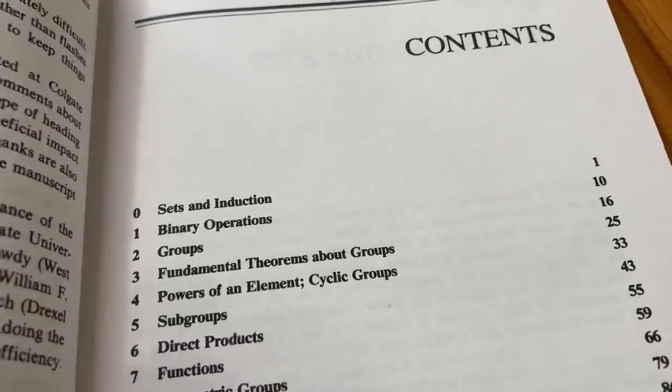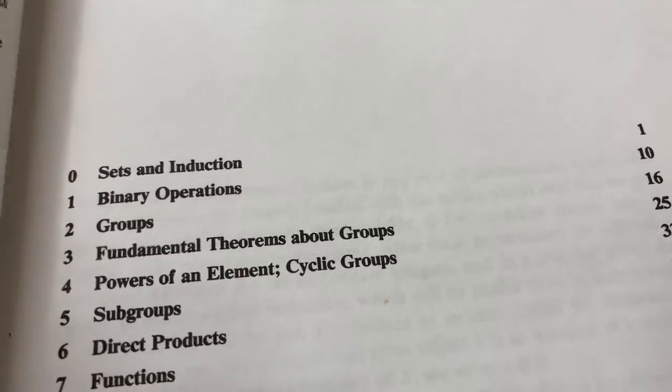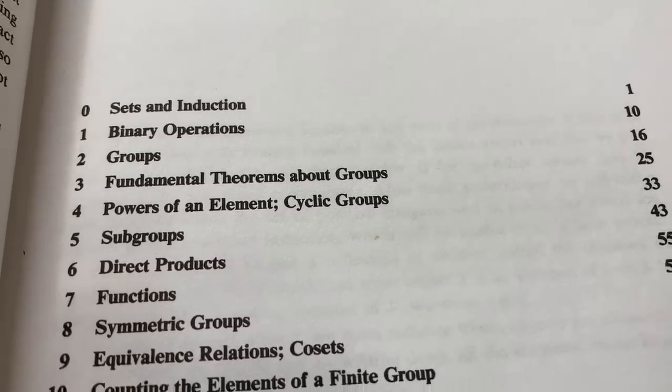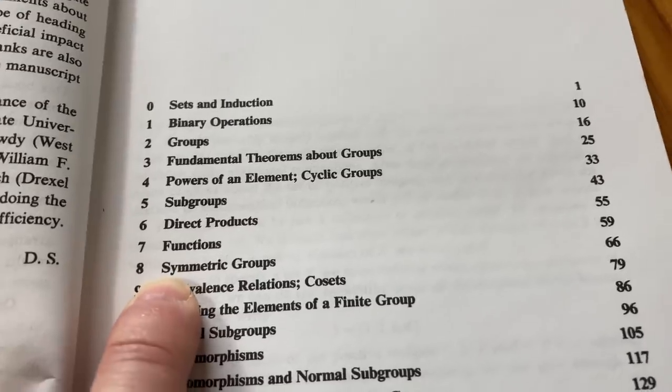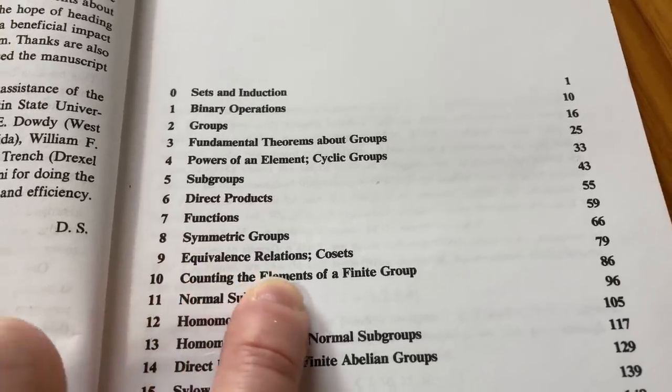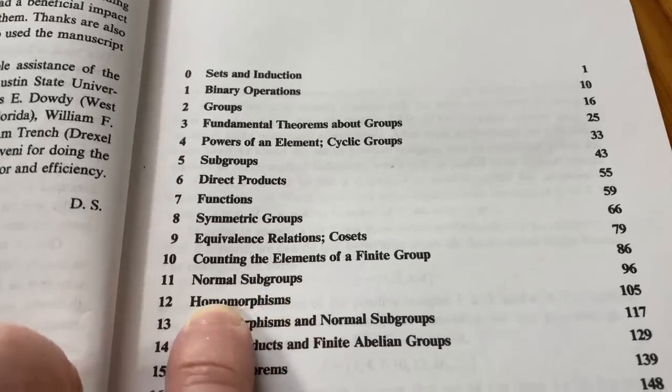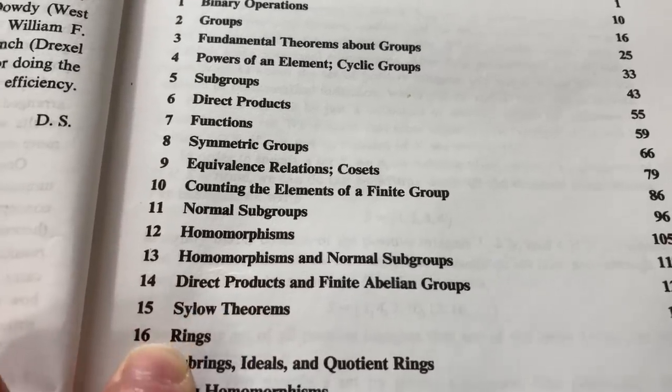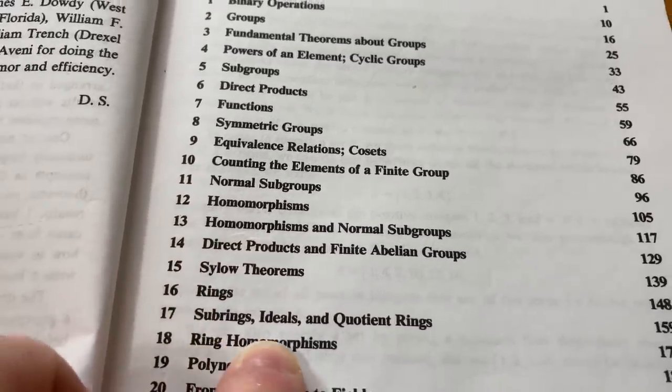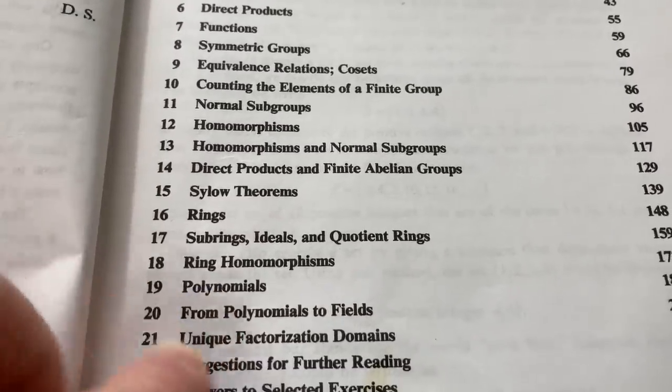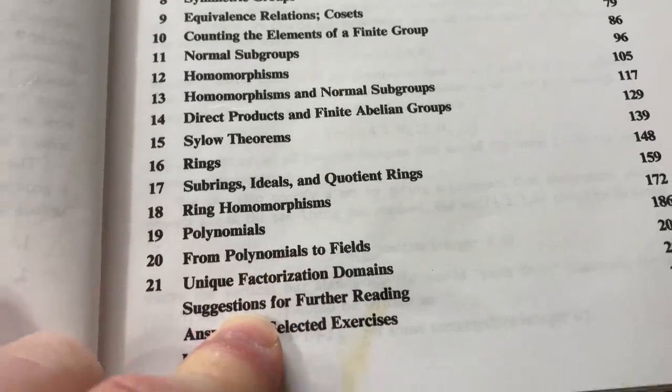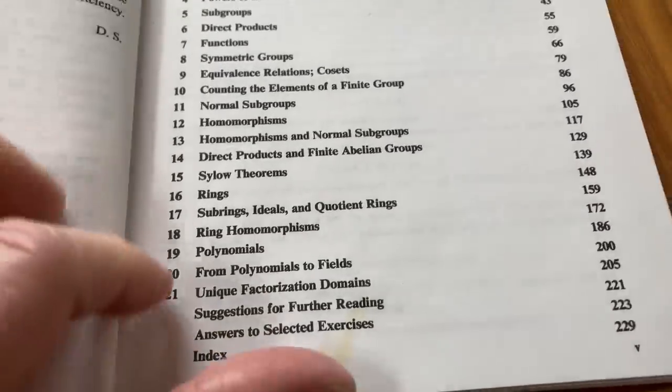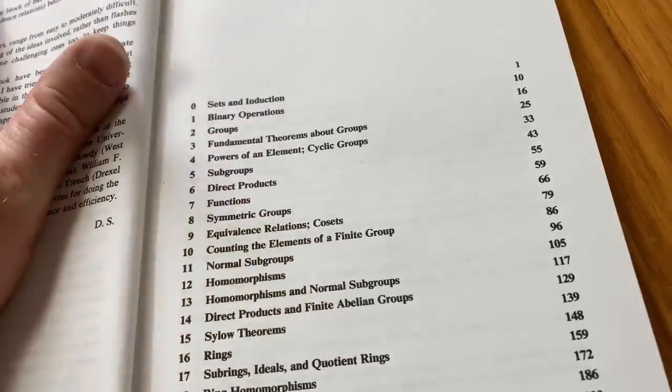This is the table of contents for the book. It starts off with sets and induction. Then it goes on to binary operations, groups, fundamental theorems about groups, powers of an element, cyclic groups, subgroups, direct products, functions, symmetric groups, equivalence relations and cosets, counting the elements of a finite group, normal subgroups, homomorphisms, homomorphisms and normal subgroups, direct products and finite abelian groups, the Sylow theorems, rings, subrings, ideals, and quotient rings, ring homomorphisms, polynomials, and then the transition from polynomials to fields. It talks about UFDs, which are unique factorization domains. And then some suggestions for further reading.